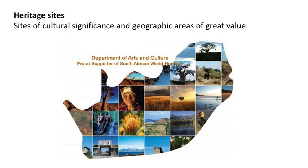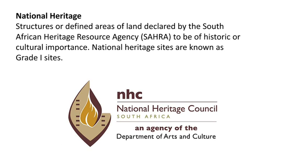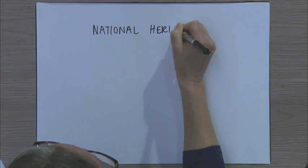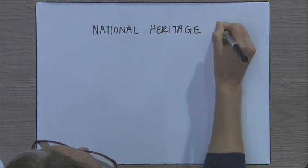Heritage sites are sites of cultural significance and geographic areas of great value — from the baobab trees in Limpopo and Mpumalanga all the way down to Robben Island in the Western Cape. National heritage refers to structures or defined areas of land declared by the South African Heritage Resources Agency, SAHRA, to be of historic or cultural importance. National heritage sites are known as Grade One sites.